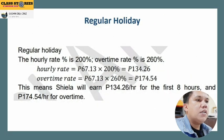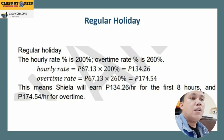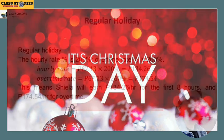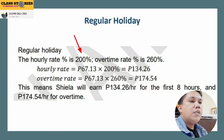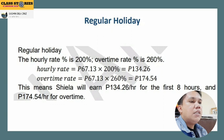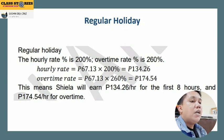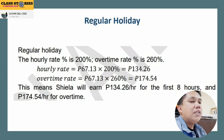For a regular holiday — say Christmas Day, December 25 — Sheila's hourly rate is 200% and her overtime rate is 260%. So 67.13 times 200% equals 134.26 pesos per hour. For overtime: 67.13 times 260% equals 174.54 pesos per hour. This means Sheila earns 134.26 pesos per hour for the first 8 hours and 174.54 pesos per hour for overtime.